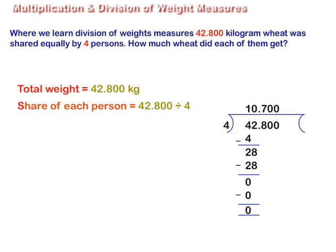Here, the total weight is equal to 42.800 kilograms. So, the share of each person is equal to 42.800 divided by 4.